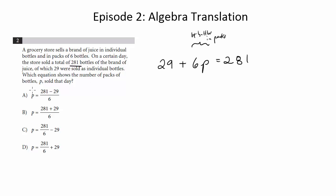And now we've just got to rearrange this to get this in terms of P. So we're going to get 6P is equal to 281 minus 29. And now we'll divide both sides by 6 and we get 281 minus 29 over 6. And looking at the choices, that looks to be choice A.